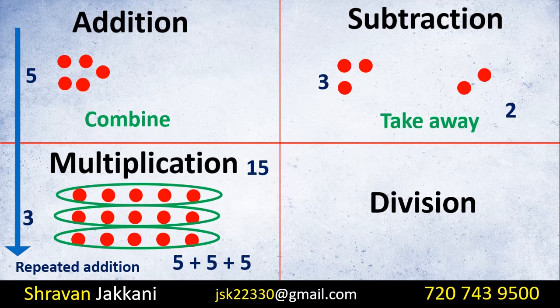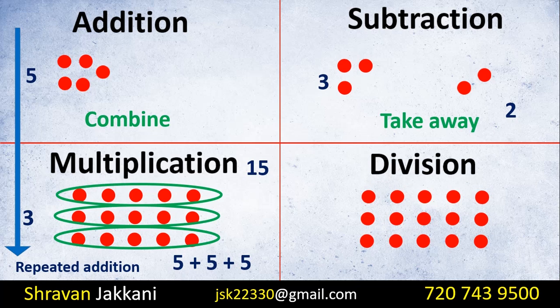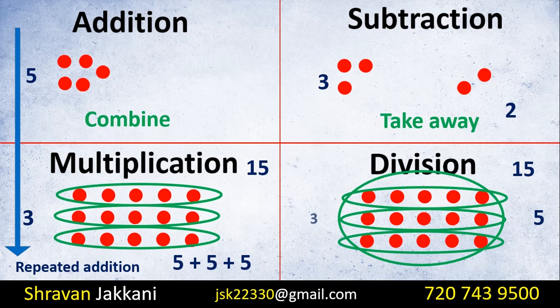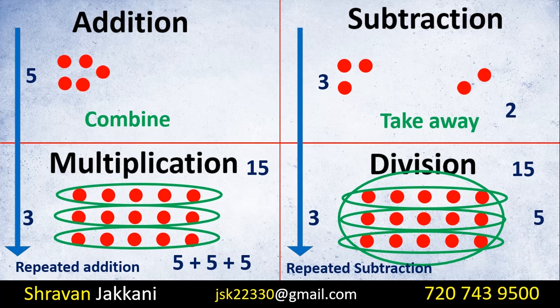If we do division, we have a total of 15. We divide into groups of 5 and we get 3 equal groups. So we subtract 15 by 5, three times. Division is repeated subtraction. Addition and subtraction are related, and multiplication and division are related.